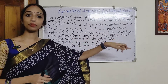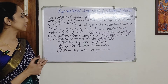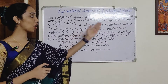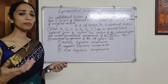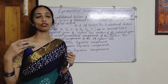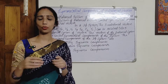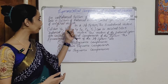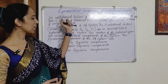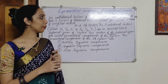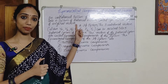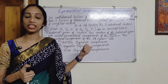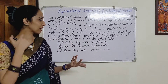An unbalanced system of n-related vectors can be resolved into n systems of balanced vectors called the Symmetrical Components of the original vectors. In the power system, we have already developed a poly-phase system and the three-phase system. The unbalanced components of the unbalanced system of n-related vectors can be resolved into balanced vectors called the symmetrical components.